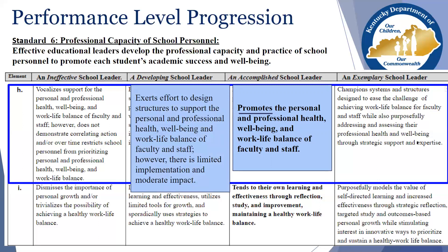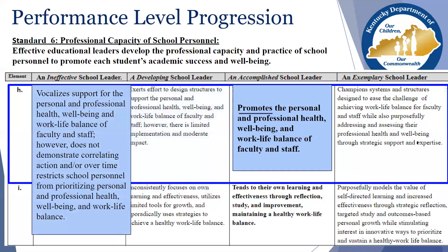In the ineffective performance level, it states that an ineffective school leader vocalizes support for the personal and professional health, well-being, and work-life balance of faculty and staff. However, does not demonstrate correlating action and or over time restricts school personnel from prioritizing personal and professional health, well-being, and work-life balance. Basically, the school leader says it is important for faculty and staff to focus on health, well-being, and work-life balance, but actions do not align with what is communicated. Thus, the school leader's attempts are unsuccessful.